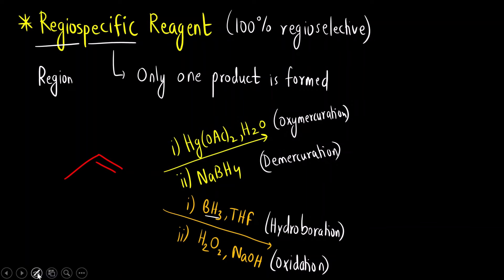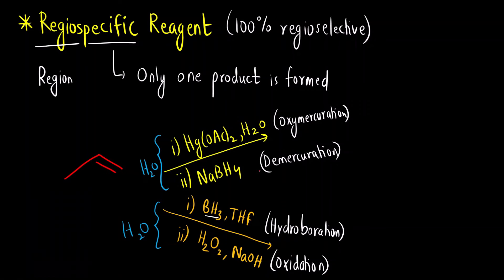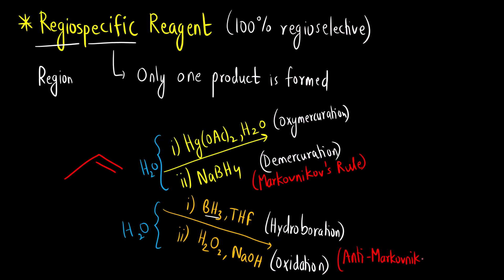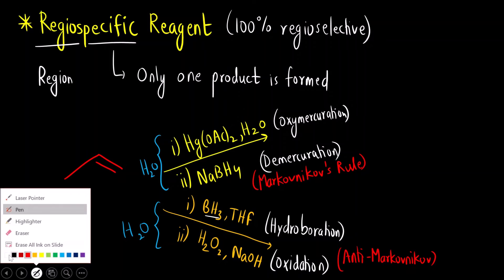What is the difference in both cases? The reagent being added is water — here also we will be adding water, here also we will be adding water. The important difference is: in oxymercuration-demercuration we follow Markovnikov's rule, so the site attacked by the reagent will be different; and in hydroboration-oxidation we follow the anti-Markovnikov rule. It is important that we know the meaning of Markovnikov and anti-Markovnikov rules.